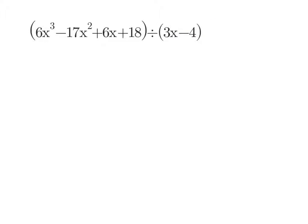Let's try one more. When we have 6x cubed minus 17x squared plus 6x plus 18 divided by 3x minus 4. First, we want to set it up. We want to find out how many times 3x minus 4 goes into 6x cubed minus 17x squared plus 6x plus 18.